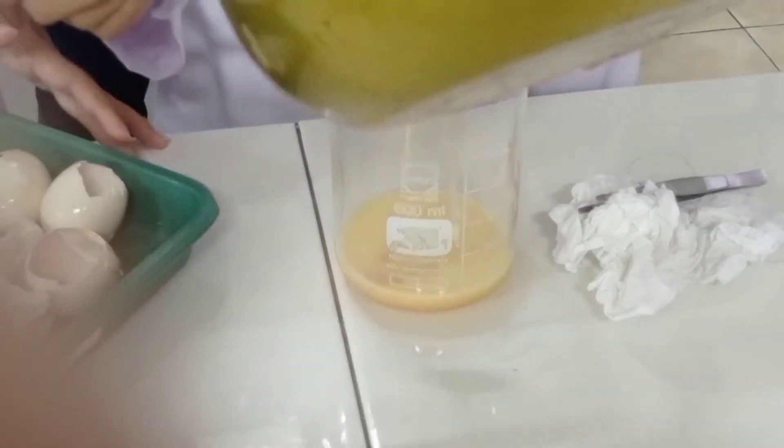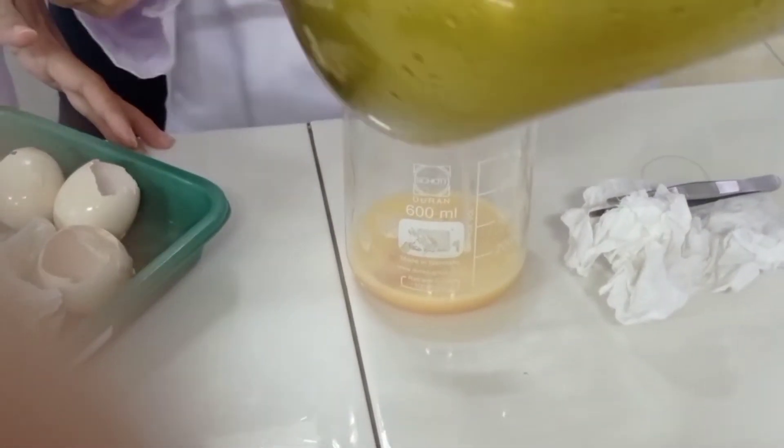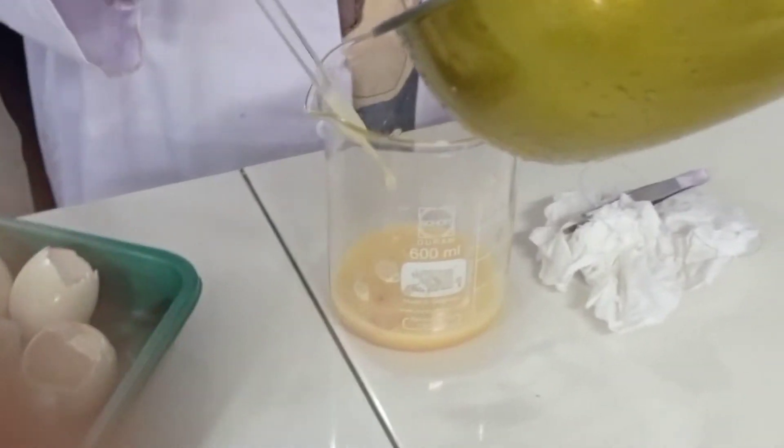Langkah keempat, yaitu membersihkan kuning dan putih telur dari sel-sel dan jaringan di sekitar embryo menggunakan pipet.